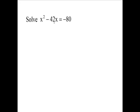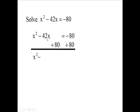Solve x squared minus 42x equals negative 80. Copy down your equation here and leave yourself a little bit of room because we want to zero out this 80. I want to have this equal to zero, so I'm going to zero it out by adding 80 here and here. So bring down the x squared, bring down the 42x, bring down the 80.